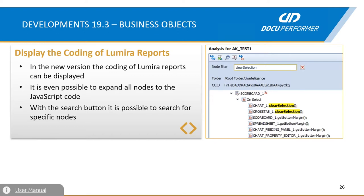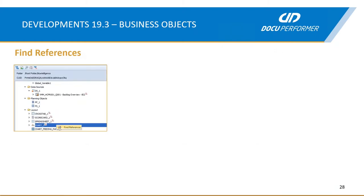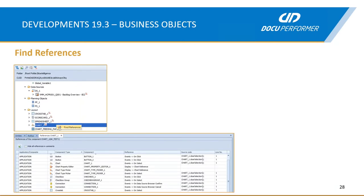It's now possible to display the JavaScript coding of Lumira reports in the analysis function. You can expand all structure elements of the Lumira document down to the JavaScript code, and with the search functionality you can even search through the specific lines. It's also now possible to find references in the Lumira component — you can check the direct usage of entities in data binding or encoding. As a result you get a clear list showing what elements are depending on which elements. You can use the context menu of a certain element, click on 'Find References', and you will get a list of all entities depending on that element, and can even look into the specific coding.